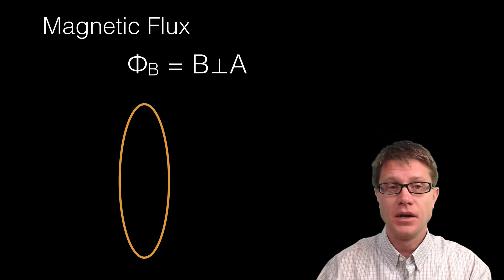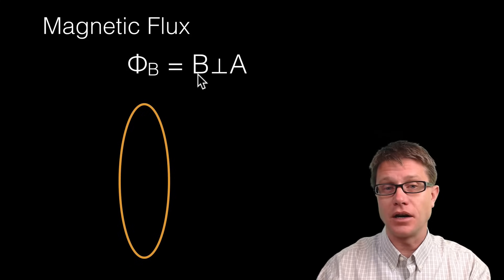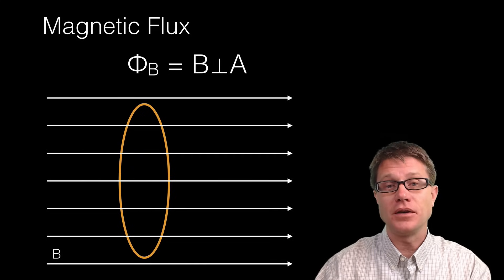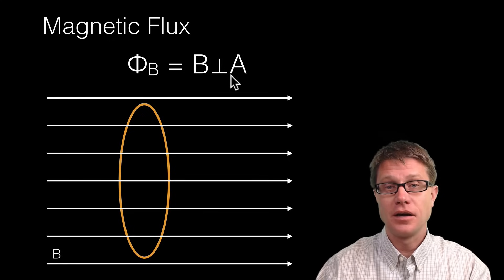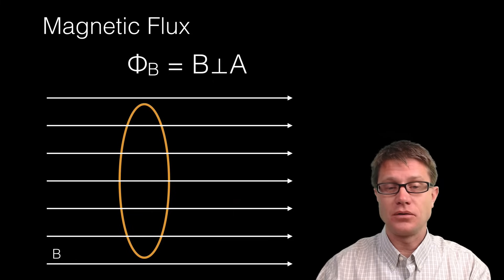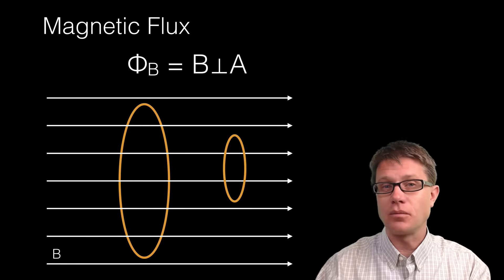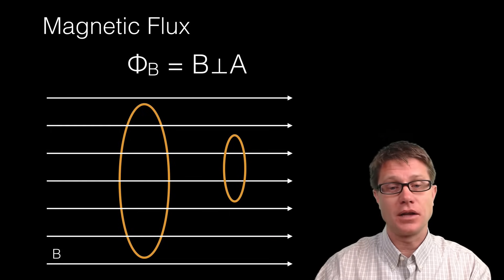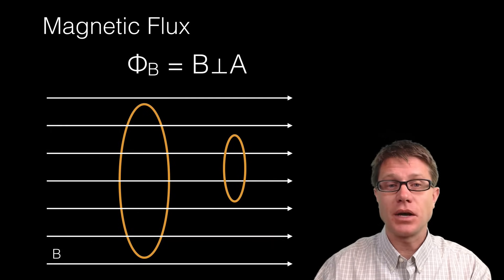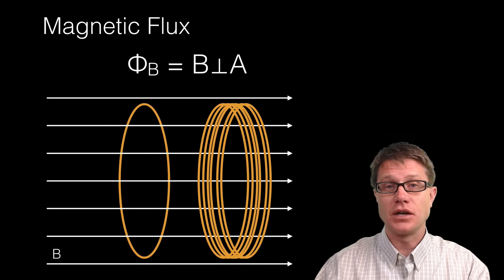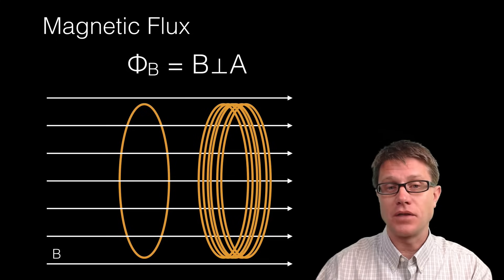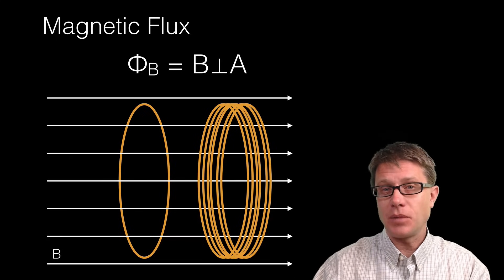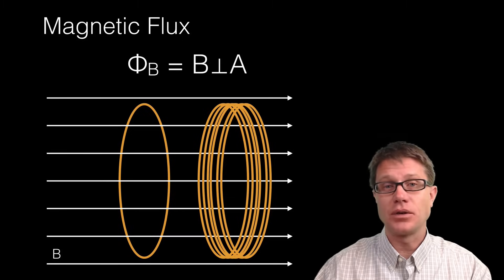Looking at the equation, magnetic flux — or phi sub B — is going to be a product of the magnetic field, how big that magnetic field is, times the cross-sectional area perpendicular to that magnetic field. Comparing two wire positions, the one facing straight on will have a larger magnetic flux because more of those magnetic field lines go through it. A good way to increase magnetic flux is to wrap that wire multiple times — each loop contributes its own magnetic flux. So by changing the magnetic field or by changing the size of that area we can change magnetic flux.